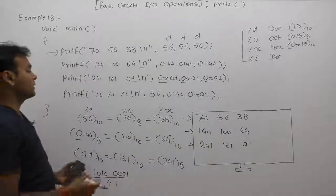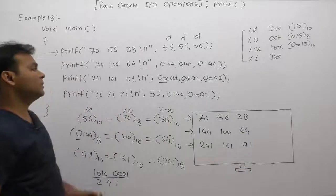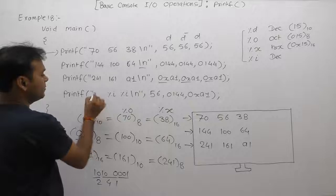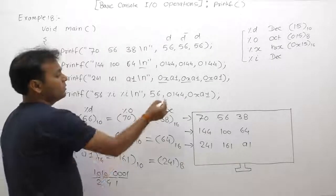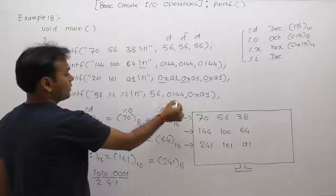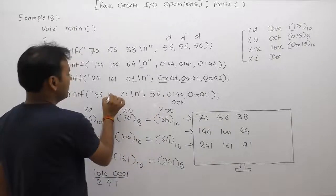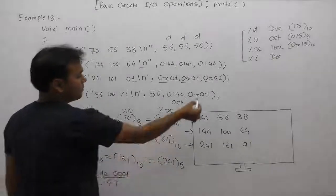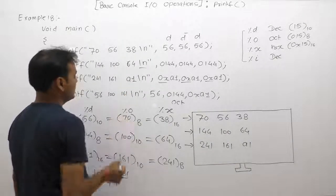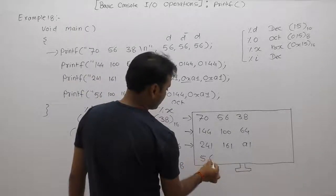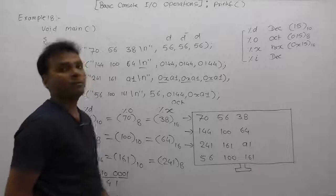In the last case, we display values using %i. Using %i, 56 (already decimal) is directly printed as 56. For 0144 (octal), %i displays its equivalent integer decimal value, which is 100. For 0xa1 (hexadecimal), its equivalent decimal value is 161. So the final output is 56, 100, and 161.